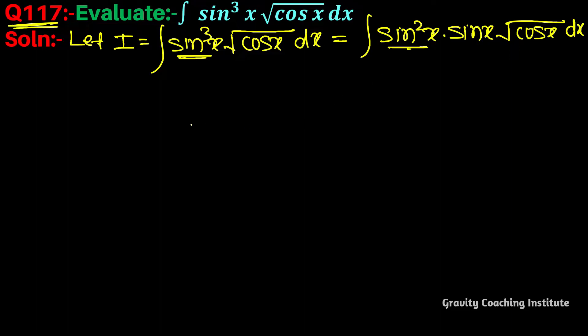We can change sin²x to 1 minus cos²x, so this becomes (1 - cos²x) into root cos x into sin x dx. Now we can change this cos x by differentiation.